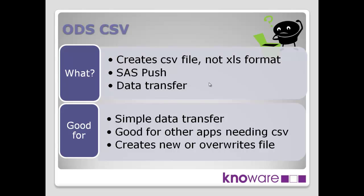What's it good for? Simple data transfer — going out to Excel. CSV files are really the lowest common denominator for transferring data between different applications, so it could also be good for things other than creating Excel spreadsheets. What it does is create a new or overwrite the CSV file you're creating. Even though we're not creating an XLS format file, Excel knows enough when it opens that file to display it and let you interact with it. If you want a real XLS format file, you can open the CSV in Excel and do File, Save As to create it as a native XLS format.